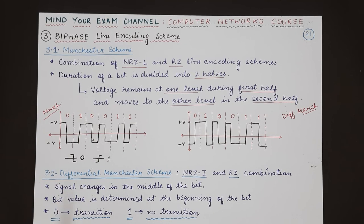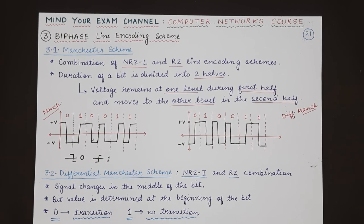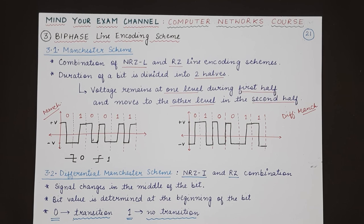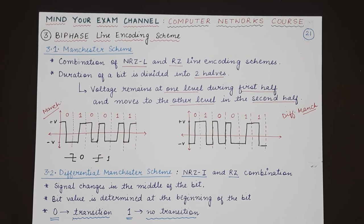So this was the biphase line coding scheme. In the next video we will be studying about the AMI and pseudo ternary schemes. Stay tuned, and if you understood the lecture please let us know in the comment section below. Thank you for watching. Mind your exam.